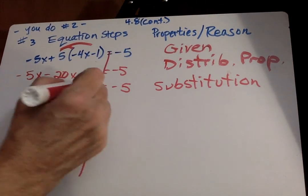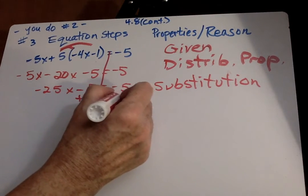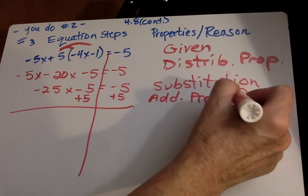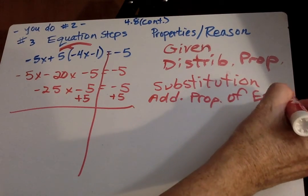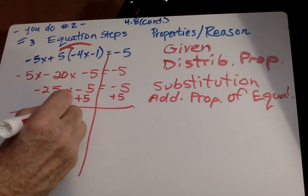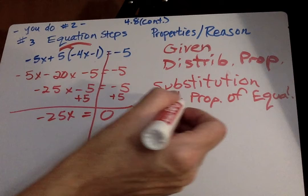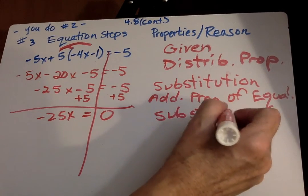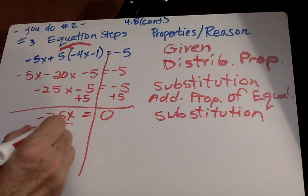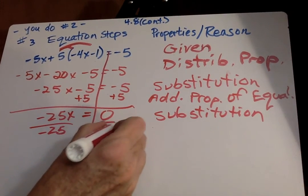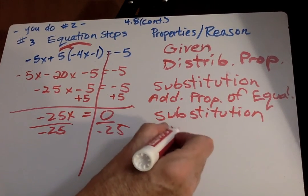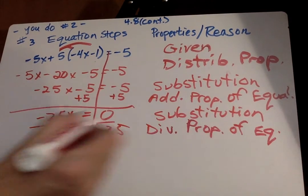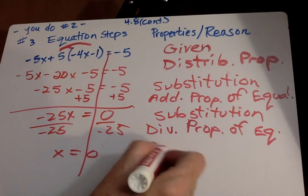Then we're going to add 5. Whatever we do on one side of the equation, we do on the other. So that's the addition property of equality. And when we do that, it's again substitution or simplify. Divide by the number in front of x. So that's division property of equality. And again, substitution.